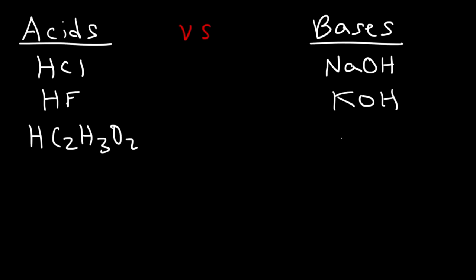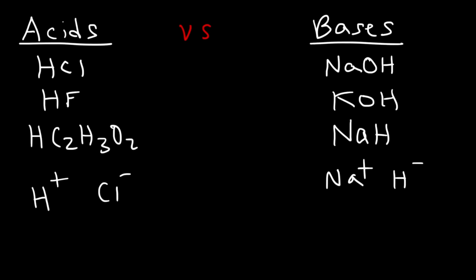If you see a hydrogen next to a metal like sodium hydride, then it's a base and not an acid. But if the hydrogen is attached to a non-metal, typically it's an acid. Whenever hydrogen has a positive charge it's an acid, but if the hydrogen has a negative charge then it's a base. Acids tend to be positively charged; bases are usually negatively charged.